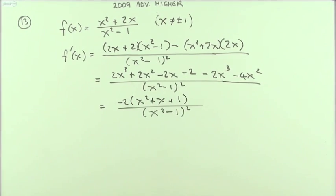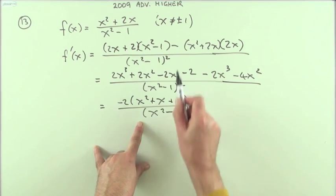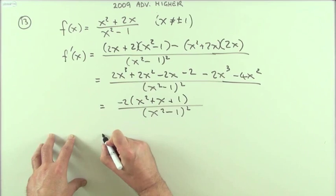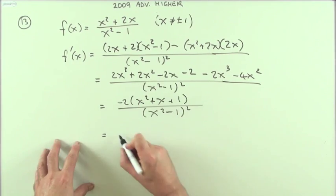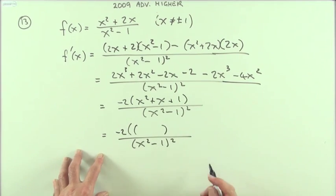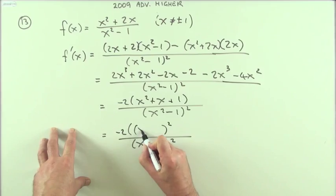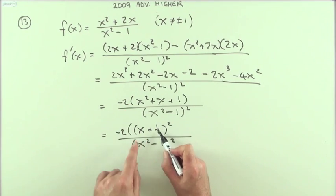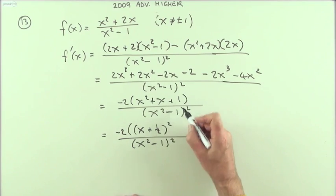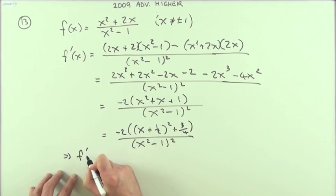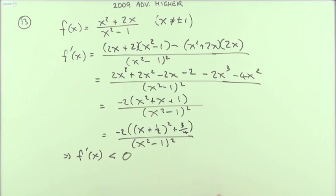So it becomes (-2x² - 2x - 2)/(x² - 1)², and I need to show that's always negative. Certainly that part's always negative, being a constant. This part is always positive since it can't be 0. I need to show that this part is always positive, then I'll have a negative times a positive divided by a positive, which is always negative. To show this is always positive, I'll complete the square. x² + x + 1 becomes (x + 1/2)² + 3/4.